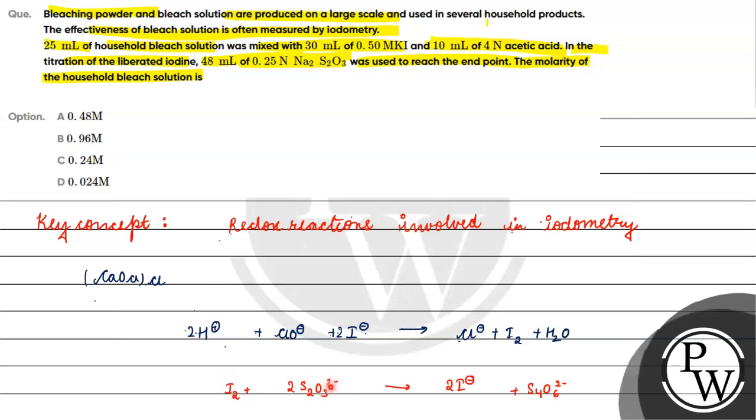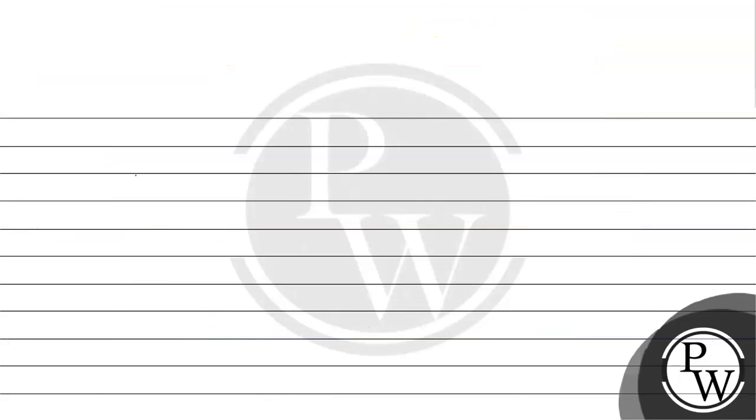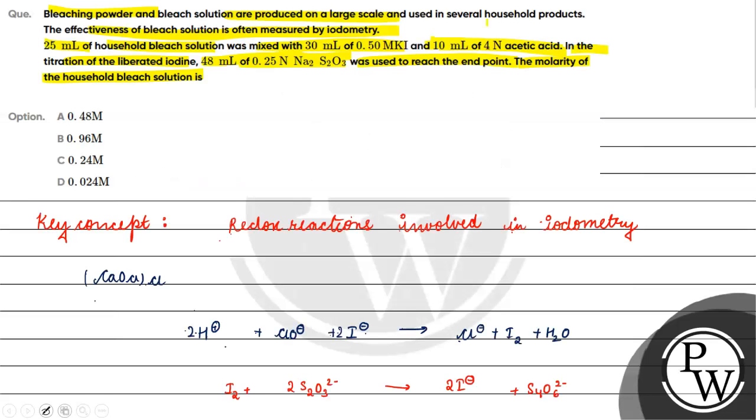Millequivalence of Na2S2O3 will be equal to millequivalence of iodine, which will be equal to millequivalence of OCl-. We can write this.